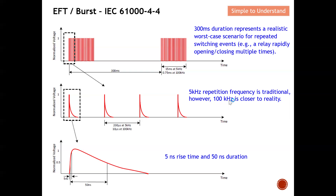If we zoom into a single pulse, you can see that the 5-nanosecond rise time and a 50-millisecond pulse duration — at least 50 percent. This is the signal pulse we send to disturb your DUT, and we want to see whether your DUT can still function.